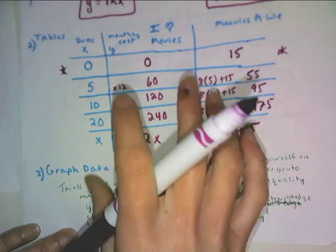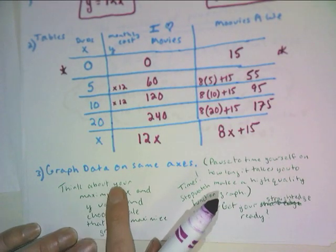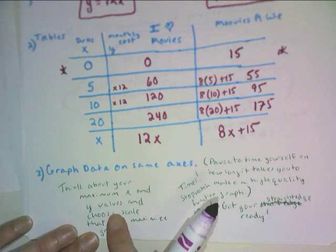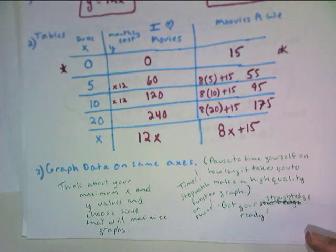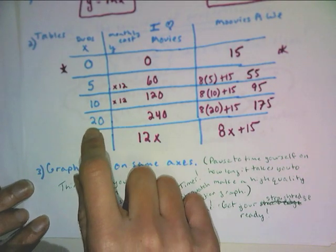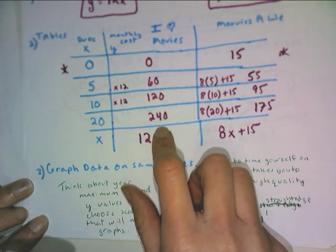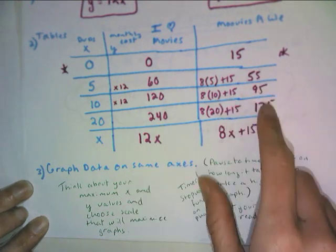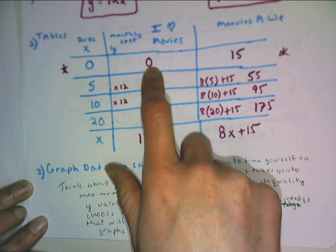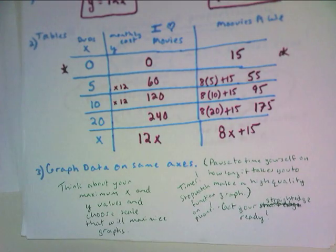So when you are graphing the stuff, you need to think about how high up your X values are going and then how high up your Y values are going, and then choose a scale that really maximizes this. So in our case, we're going up to 20 DVDs. For this company, our price has to go to $240. For this company, our price goes to $175 and starting at the origin. So go ahead and pause it, and then we'll compare graphs.